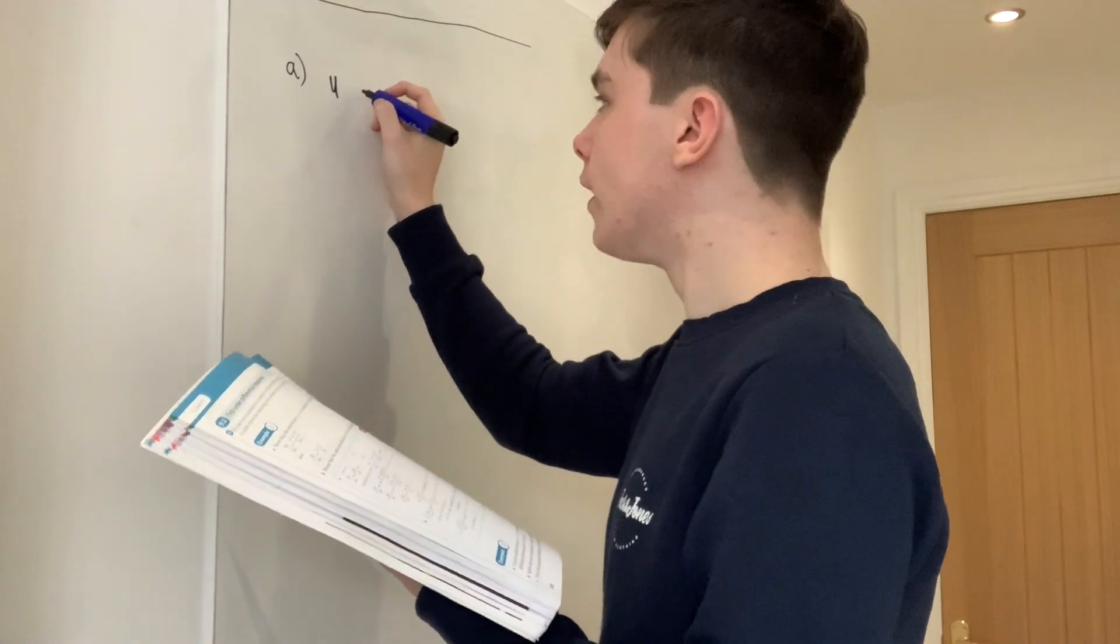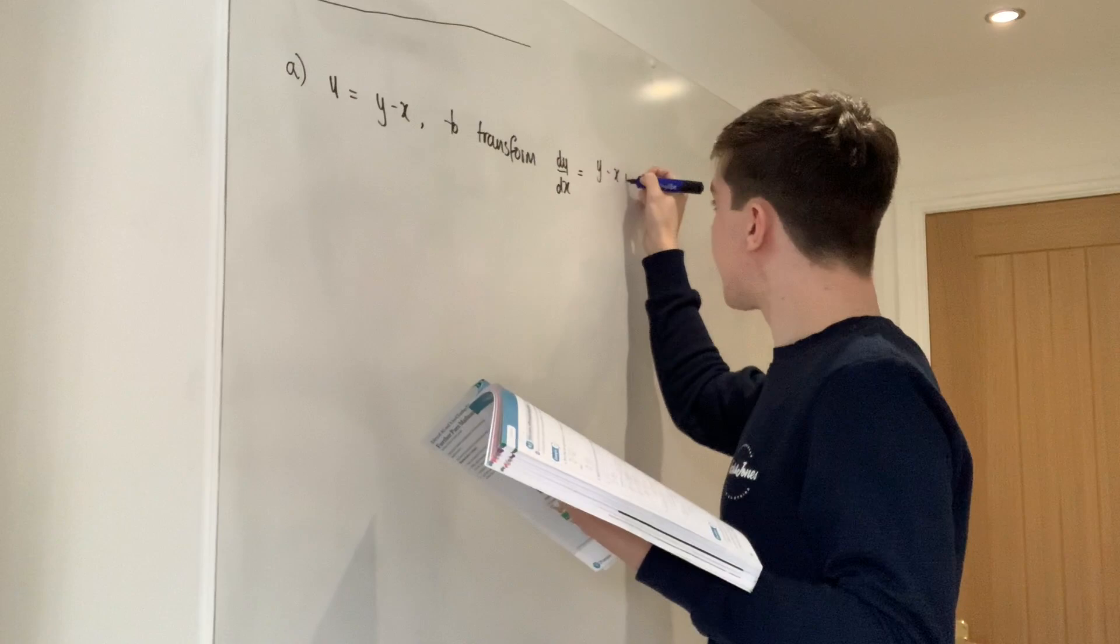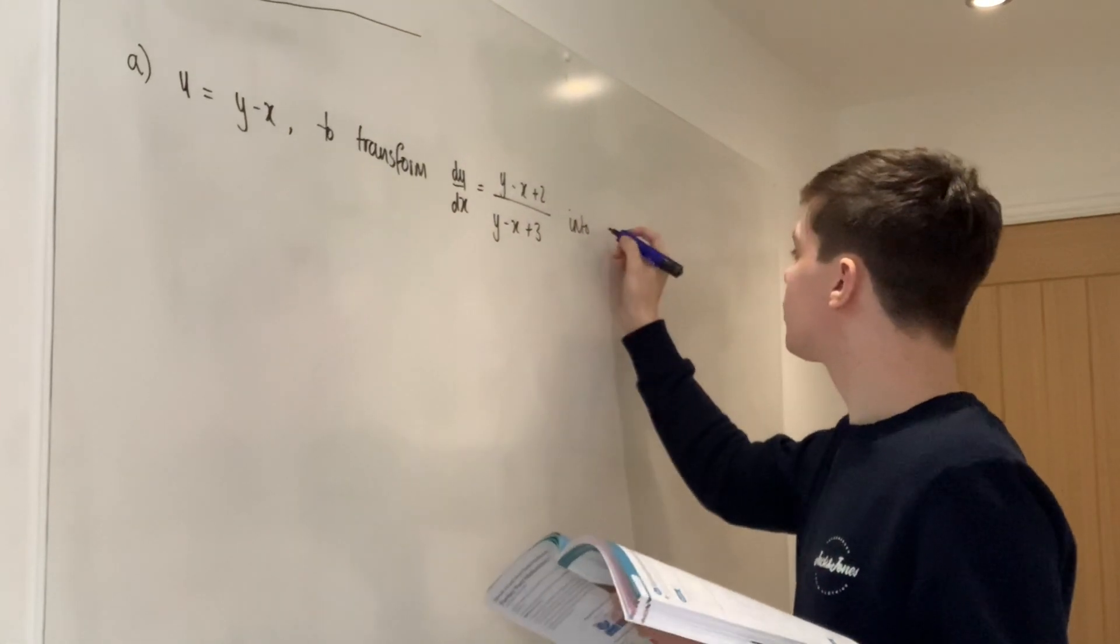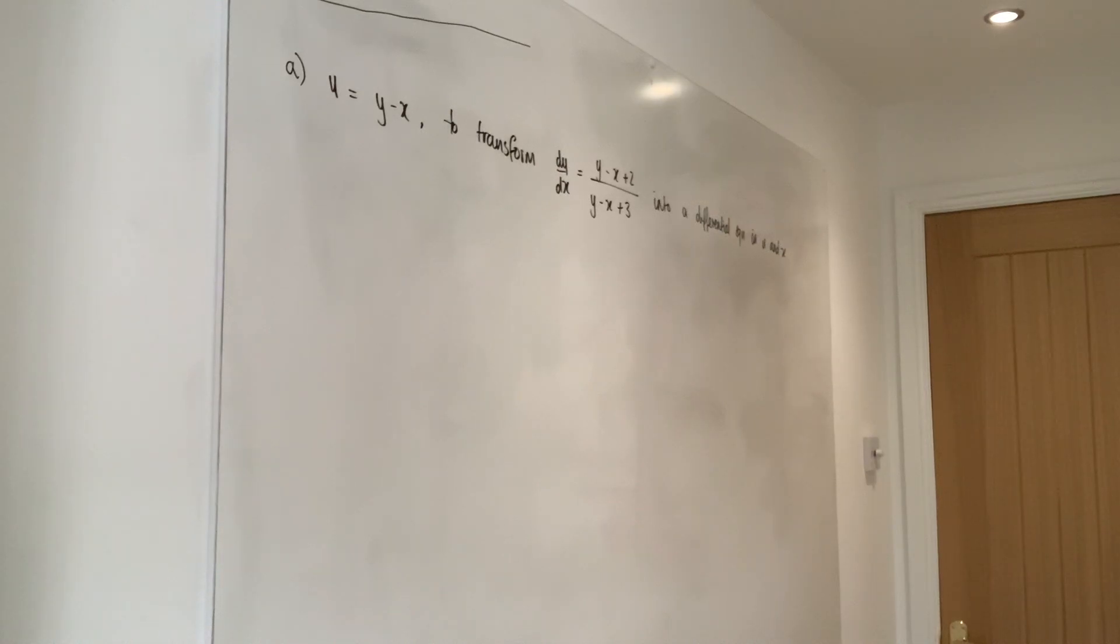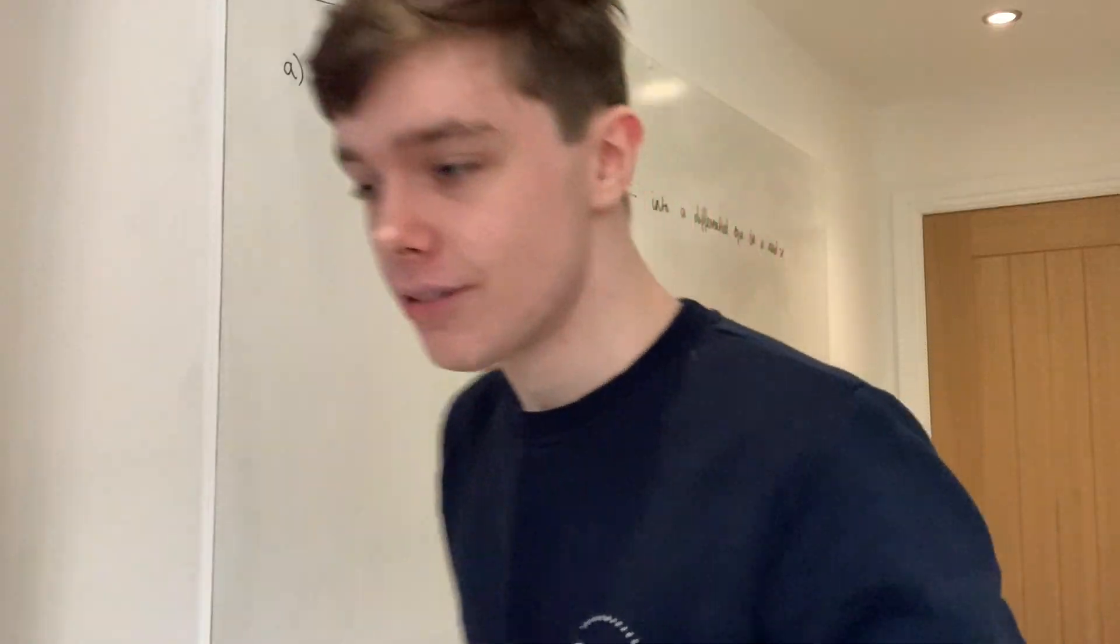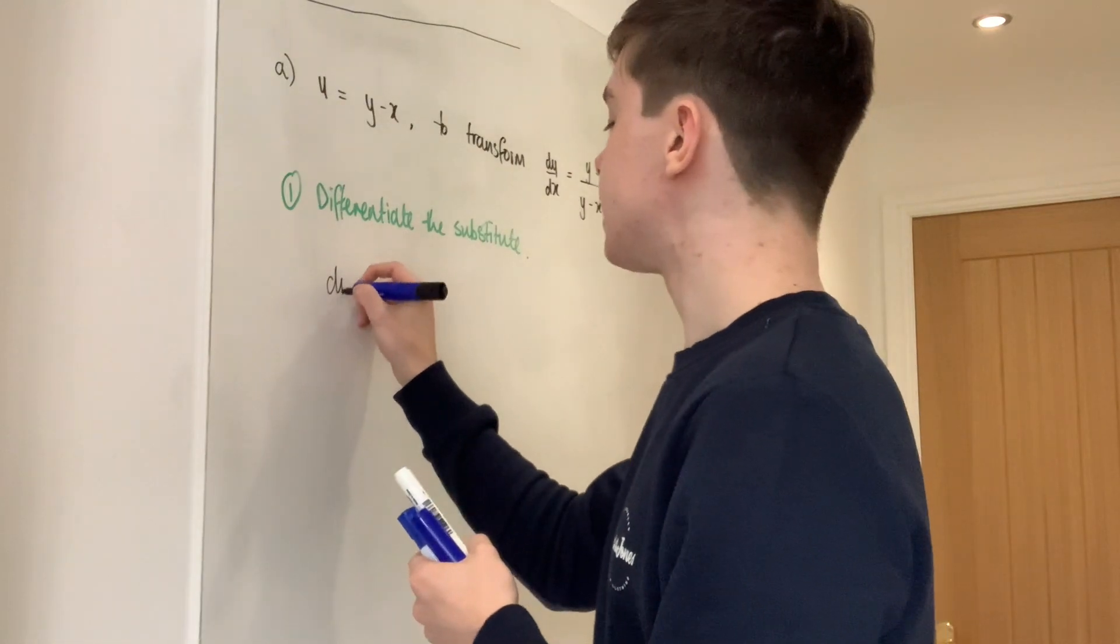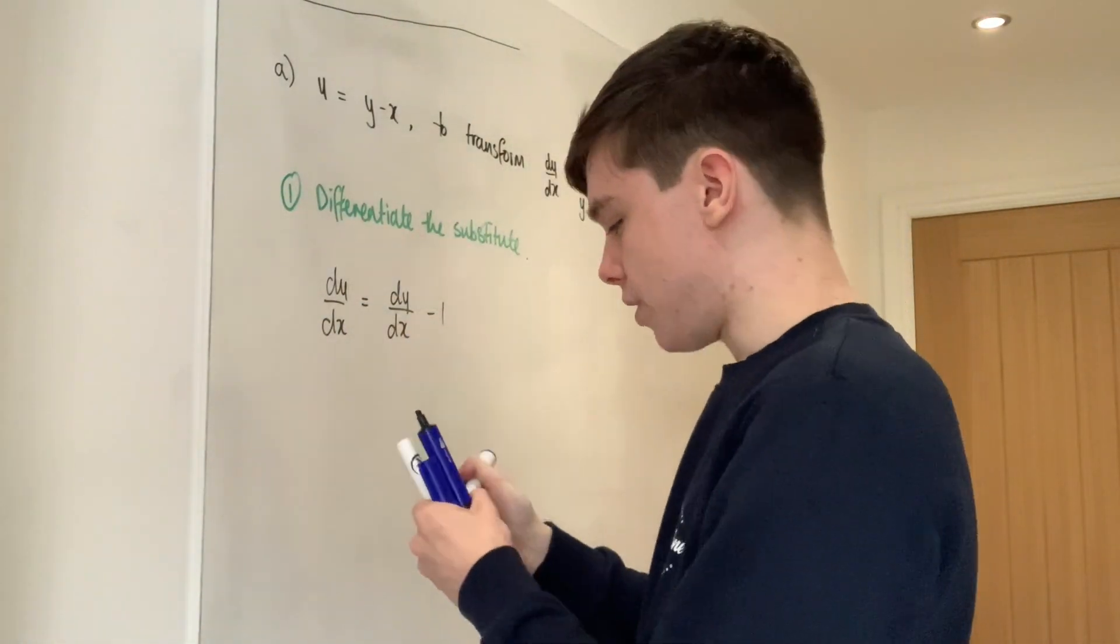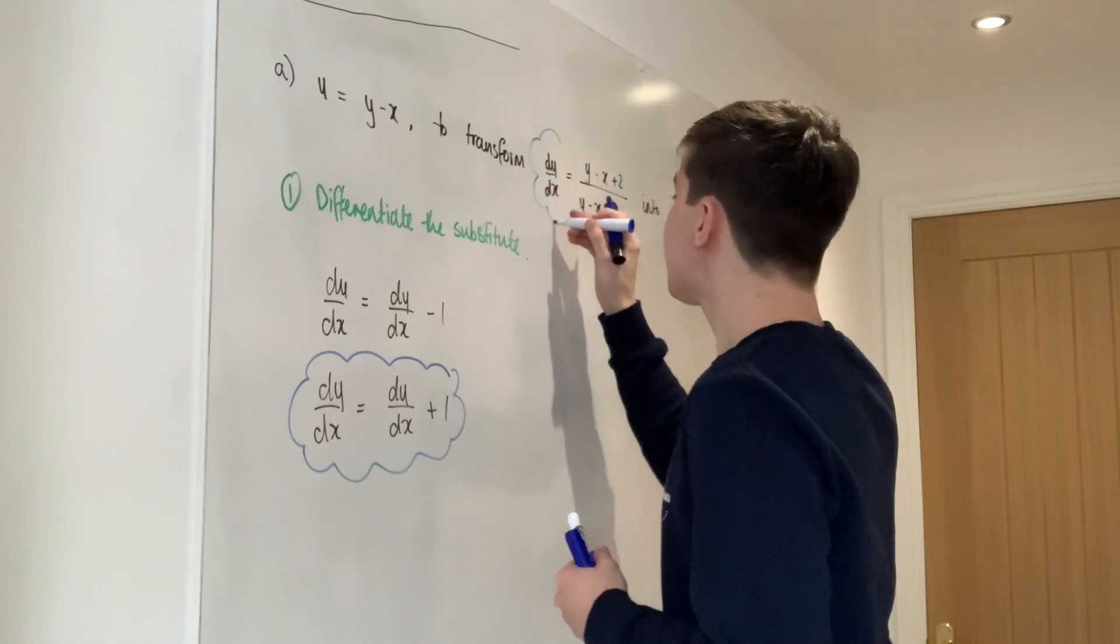So, I'm going to write the question down first. Write it down in full. Part A. Use the substitution U equals Y minus X. DY DX equals Y minus X plus 2 over Y minus X plus 3 into... Oh, this is a bit of a different one, this one. It just says into a differential equation. If anybody takes further maths A level for the NXL course, I don't know about the rest of them because I don't know what they do. If you take the further pure module, this is a nice question that you get. Okay. So, I'm going to grab some colours.